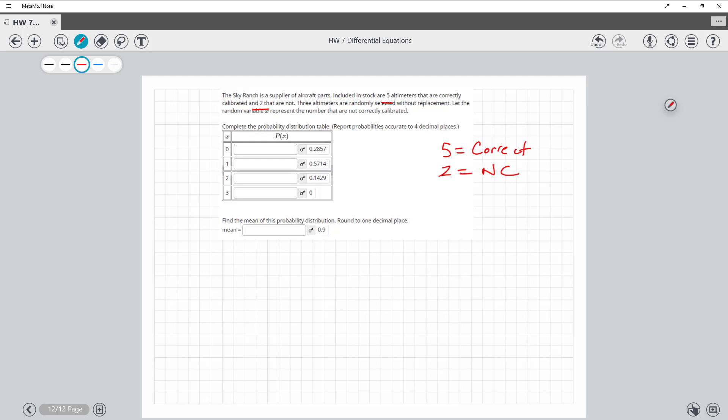So we'll call that not correct, and we're choosing three at a time, and we want to fill out this probability table that I already showed you the answers. But how did I get those? And then we want to find the actual mean.